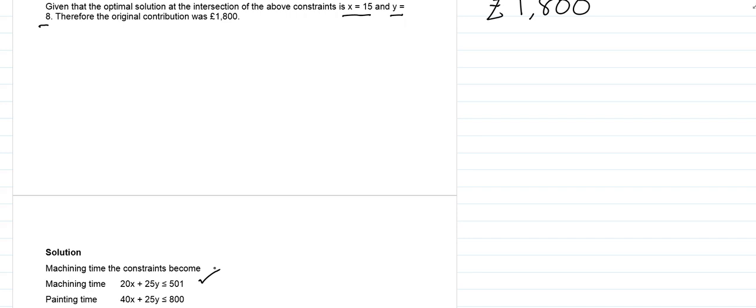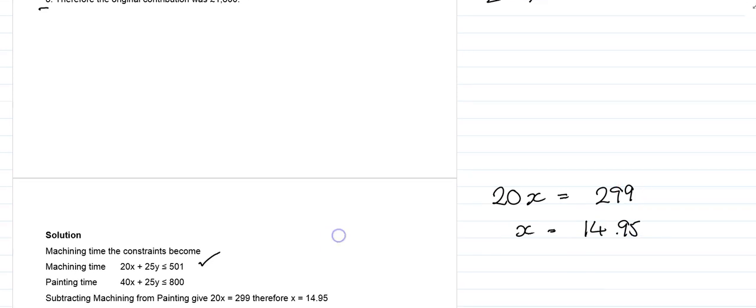We can now solve these simultaneous equations by deducting one from the other, as we always have done before, which gives us 20x equals 299. If 20x equals 299, x is going to equal 14.95, as we can see there.